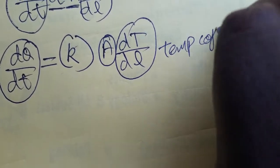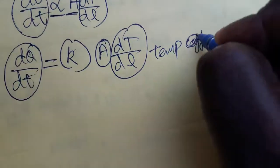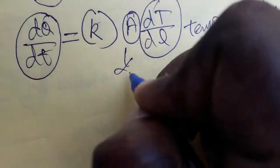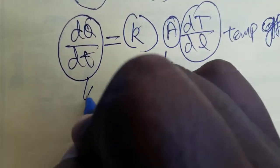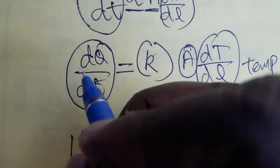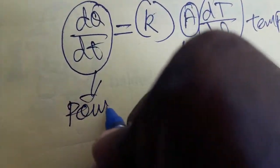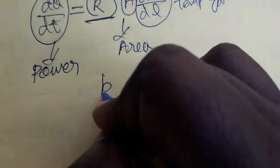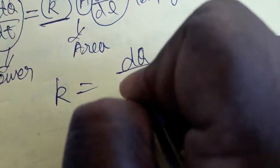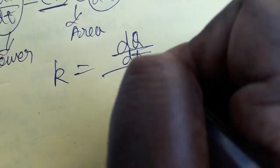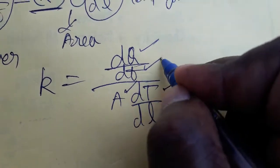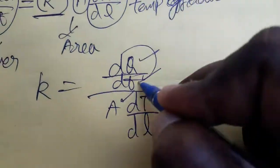dQ/dt is heat energy changing with respect to time, A is the area, and dT/dL is the temperature gradient — temperature changing with respect to length. The rate of change of heat we can take as power. So k = (dQ/dt) divided by (A × dT/dL).